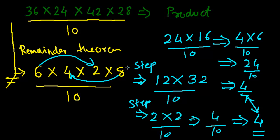So you can choose any two numbers — 8 and 6, or 4 and 2 — and multiply them in any order. You can even multiply all of them together and find the remainder, though that is a longer process.